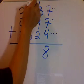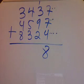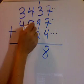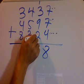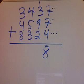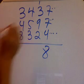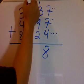Then you've got 1 and 3 which is 4, plus 2 over here gives me 6, plus 9 gives me 15.